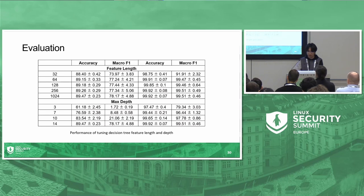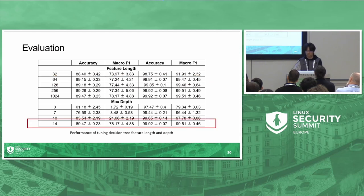Here are the details of parameter tuning for the decision tree. With a feature length of 64, we achieve good results, and optimal performance is observed at a maximum depth of 14. Using the decision tree, we further fine-tune the hybrid parameters.